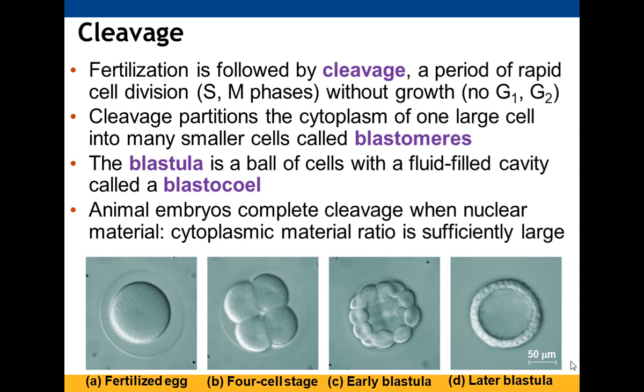After fertilization, there are a series of cleavage steps where both DNA synthesis and mitosis take place, but not the growth phases G1 or G2 of the cell cycle. Cleavage takes the cytoplasm of the former egg cell and divides it into smaller cells called blastomeres. The blastula is a ball of cells with a fluid-filled cavity called a blastocoel. When cleavage is complete, there is a very large ratio of nuclear material compared to cytoplasmic material.